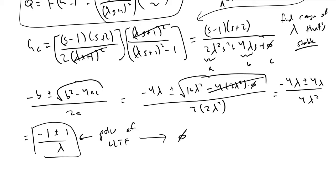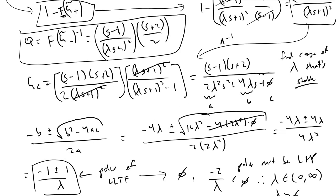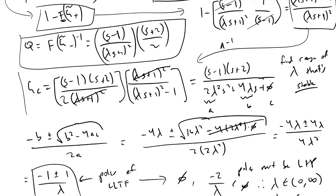Analyzing each root: minus 1 plus 1 gives 0, and minus 1 minus 1 gives -2/λ. Because we know the poles must be in the left-hand plane — they must have a real part less than 0 — this tells us that -2/λ must be less than 0. Therefore lambda must be greater than 0, meaning lambda can be anything between 0 and positive infinity. So we've determined the range of tuning parameters, as well as the controller transfer function.